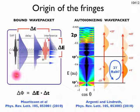As time passes, continuum and bound states accumulate an additional phase difference given by the product of their energy difference and the time lapse.